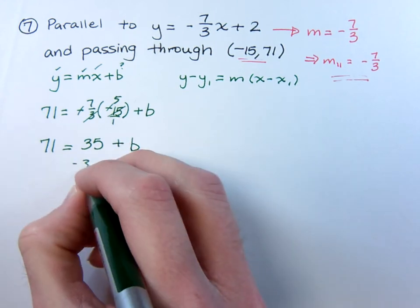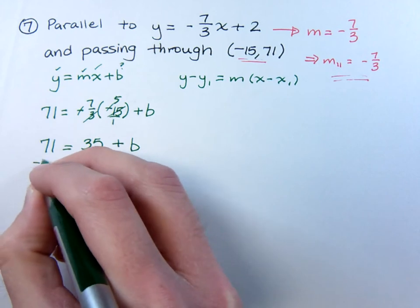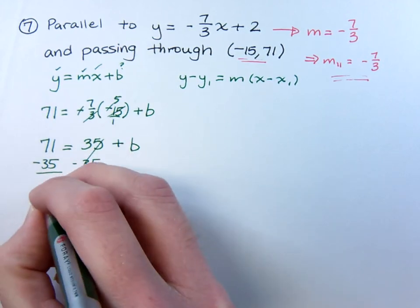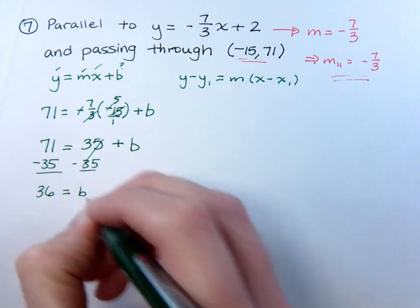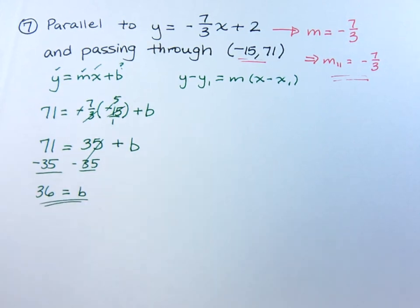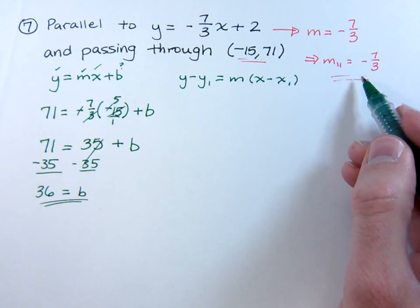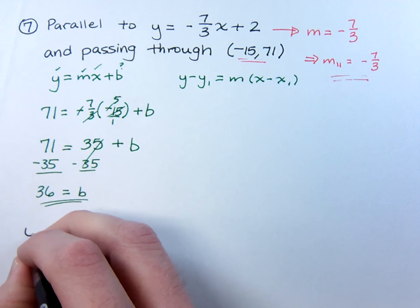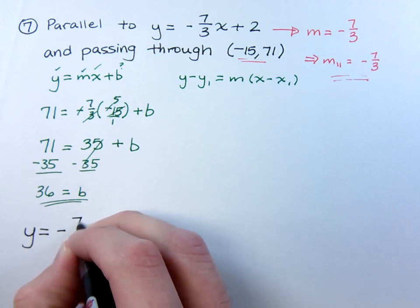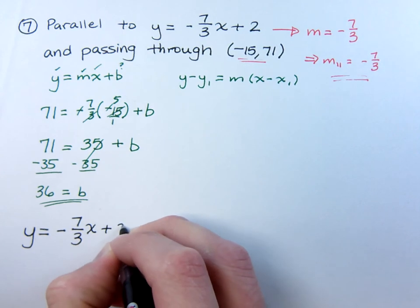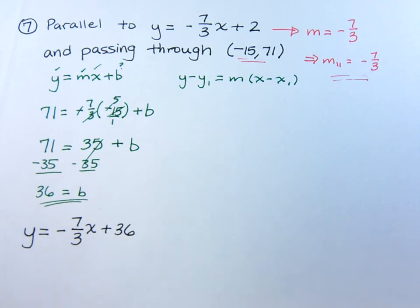Solve this equation for b, and you find out that b is equal to 36. So taking your b and your slope that we already found, we can then write the equation for our line. So y equals negative 7 thirds x plus 36.